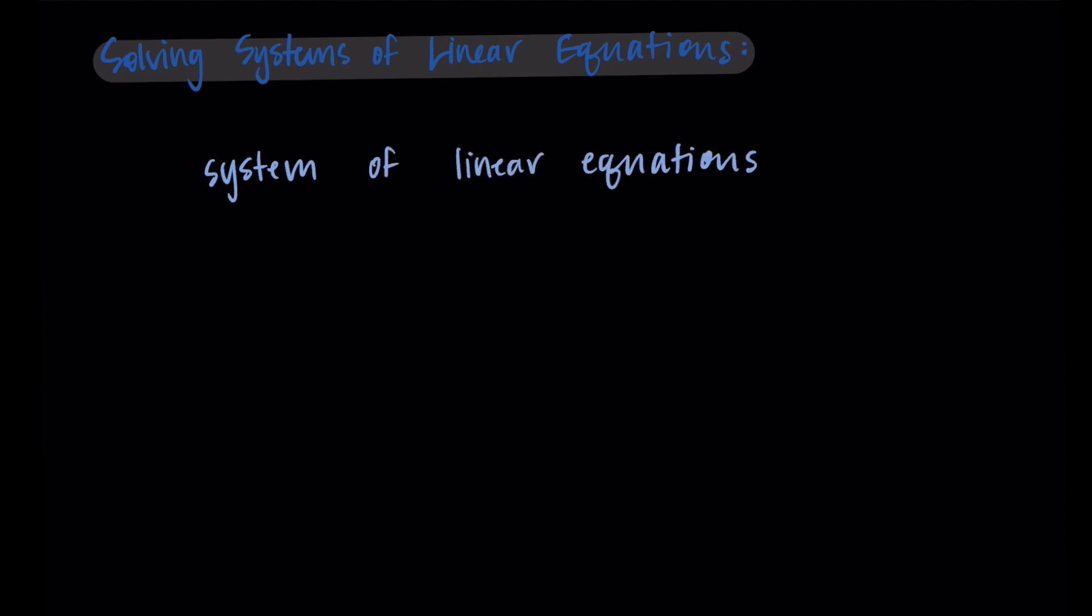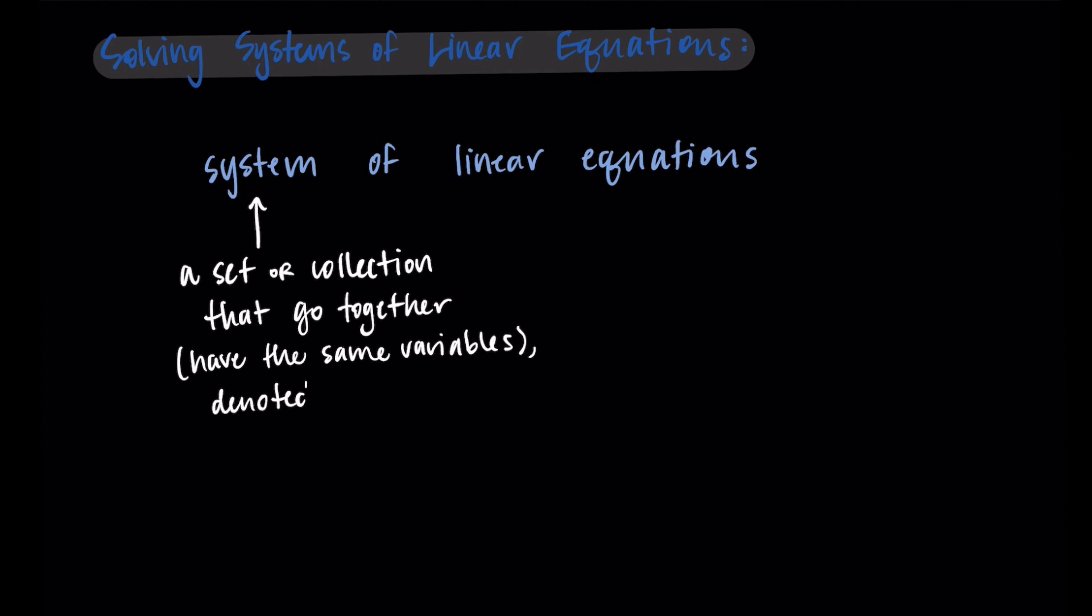Let's start with this idea of a system of linear equations and make sure we understand what that means. In this context, a system is basically just a set or collection of items that go together. That means we have the same variables involved with the linear equations we're dealing with. It's a set or collection, and we denote it with this large bracket, and then we write our equations in the bracket.